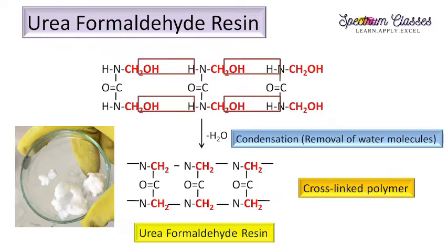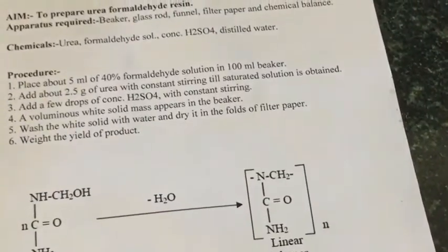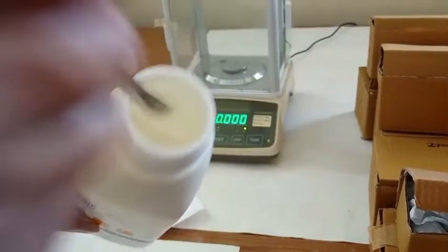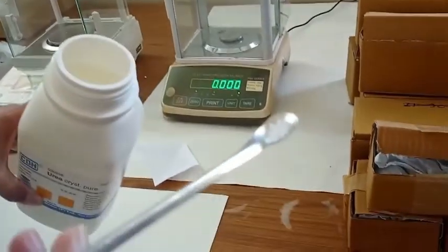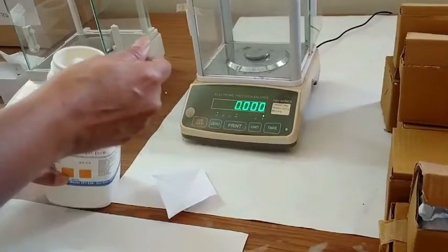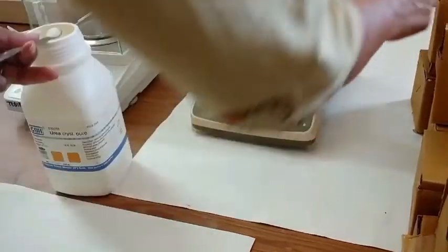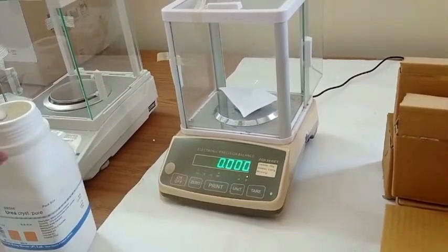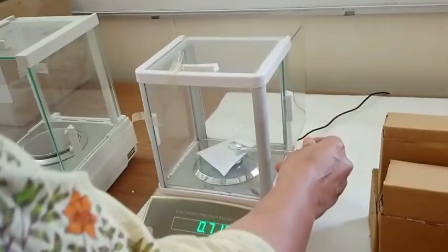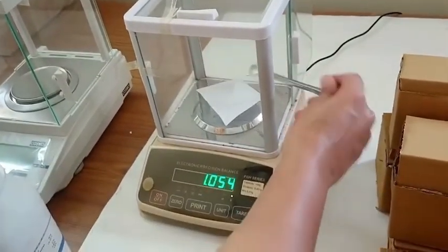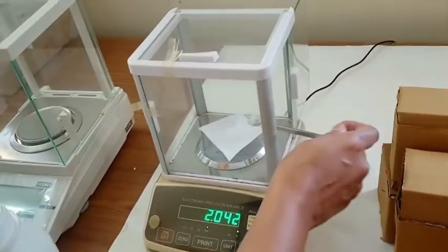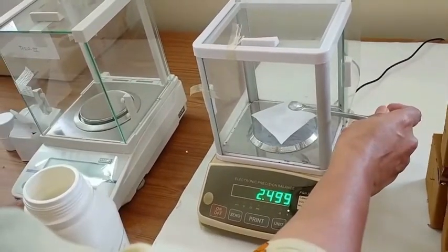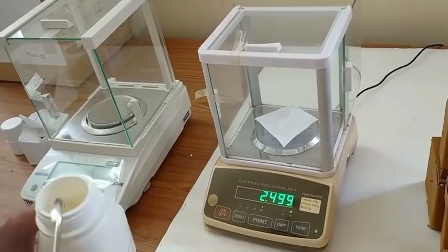Now I will show you the experiment. The aim of the experiment is to prepare urea formaldehyde resin. This is the urea, its CAS number, its molecular formula — see how it looks. Now we are going to weigh 2.5 grams for this experiment. It is about 2.5 grams.